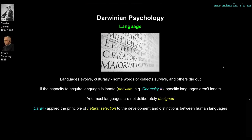This idea is still present in psychology of language and linguistics. Noam Chomsky argues that while languages might evolve culturally — specific words, accents, or dialects may survive or die out — something about language has to be innate. For example, the ability to acquire language seems to be innate. This is a nativist view, as proposed by Chomsky, but Darwin mentioned this as well. While the ability to acquire languages is innate, specific languages are not. Most languages throughout time are not deliberately designed; they evolved and are selected in a kind of cultural evolution. Darwin applied the principle of natural selection to the cultural evolution and distinctions between human languages.